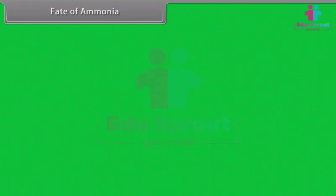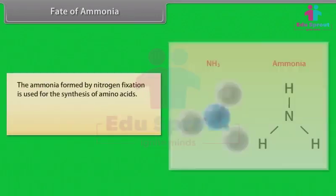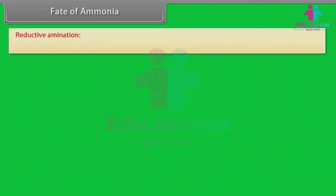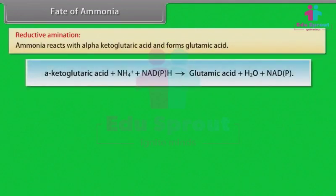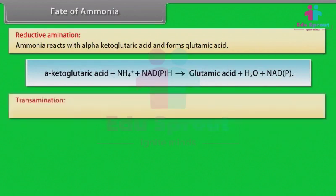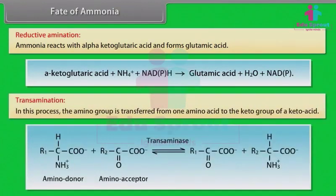The ammonia formed by nitrogen fixation is used for the synthesis of amino acids. There are two processes by which amino acids are synthesized: reductive amination, in which ammonia reacts with alpha-ketoglutaric acid to form glutamic acid; and transamination, in which the amino group is transferred from one amino acid to the keto group of a keto acid.